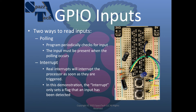One thing to mention: the capacitors I'm using here are electrolytic, which means they have a polarity. There's a stripe on the capacitor with a little negative sign, and you need to make sure that goes to ground — to the lower potential. If you get it backwards, these things can pop. So if you're using an electrolytic capacitor like this, just make sure you get the polarity right.